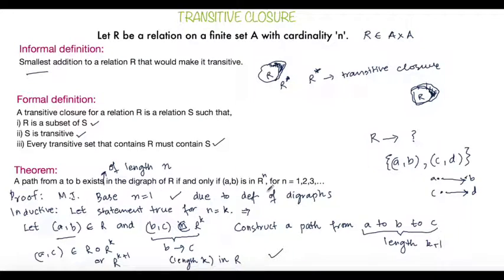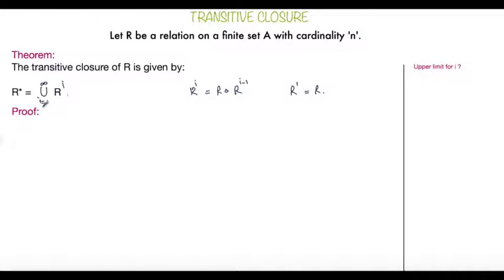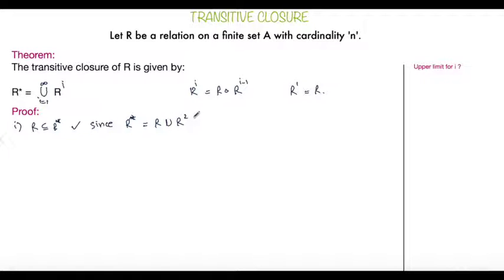So now let's go to the transitive closure. The transitive closure of R is given by R* equals the union for i from 1 to infinity of R^i. Remember R^i is R composed with R^(i−1), and R^1 is just equal to R. Now let's check the three conditions. The first condition is that R should be a subset of R*. This is obvious since R* contains R — R* is R union R² union and so on.